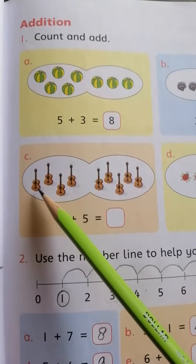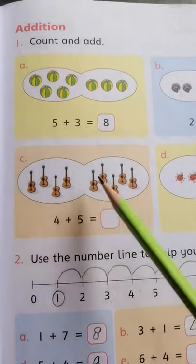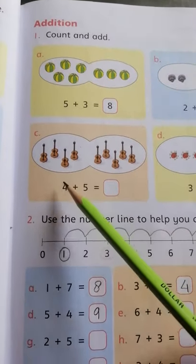Okay students now you can see here are few guitars. These are 1, 2, 3, 4. 1, 2, 3, 4, 5. 5 guitars are here and 4 are here.